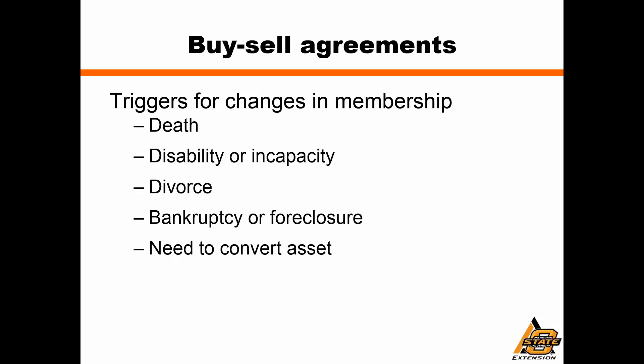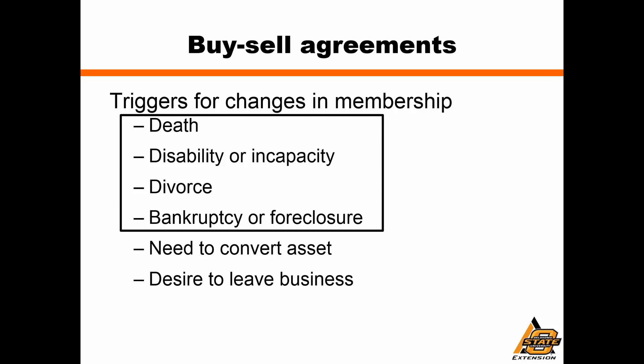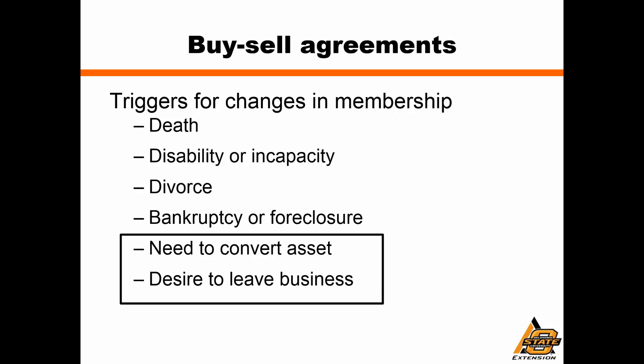There may also simply be a need on the part of one of the owners to sell — they might need cash for some expense, or they might want to leave the business. The first four triggers are often what we would call involuntary, meaning the buy-sell agreement is automatically triggered and the entity or other owners must buy out the affected share. The last two items are more discretionary and may trigger slightly different language, because you may want different mechanics for voluntary versus involuntary circumstances.